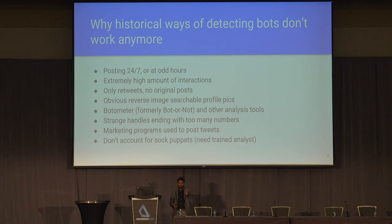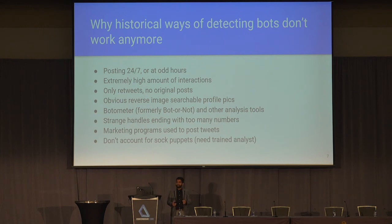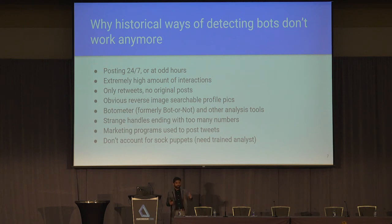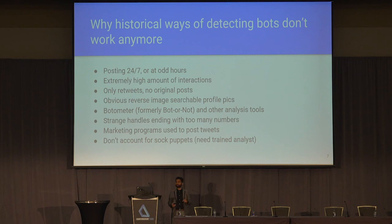The Internet Research Agency and similar bots would post 24/7 at hours like Moscow time, pretending to be Americans. Those accounts on Twitter would have extremely high amounts of interactions but would only retweet — never post anything original. At the beginning, they used pictures pulled from random websites that were easily reverse image searchable. Sometimes they'd have handles like 'Jeff Smith 0069 423', which is not a normal Twitter handle. And sometimes they used third-party applications to post tweets.